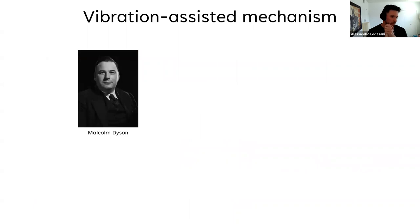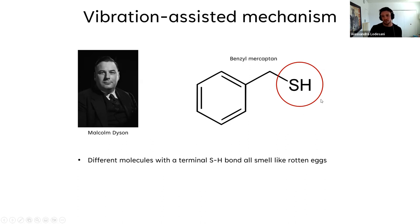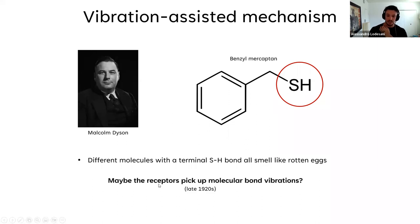Then Malcolm Dyson noticed something: a large group of molecules called mercaptans all share a sulfur-hydrogen terminal bond, and they all smell like rotten eggs. He proposed that maybe olfactory receptors pick up specific bond vibrations — that it's the molecular vibrations we smell, not the molecule's shape itself.